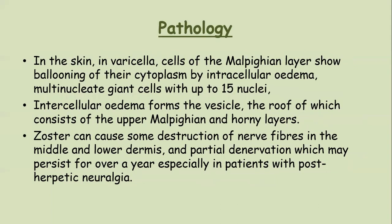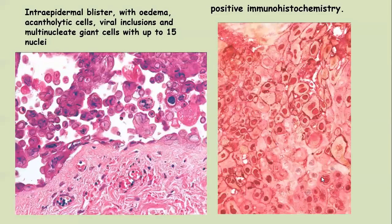Pathology: in varicella, cells of the malpighian layer — that is, keratinocytes — show ballooning of their cytoplasm, intracellular edema and multinucleated giant cells with up to 15 nuclei. The pathological picture is almost similar to herpes simplex virus. Intercellular edema forms the vesicles, the roof of which consists of upper malpighian and horny layers. Zoster can cause some destruction of nerve fibers in the middle and lower dermis and partial denervation persisting for over a year, especially in patients with post-herpetic neuralgia. These histological images show acantholytic cells and multinucleated giant cells, both with intranuclear inclusions.